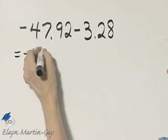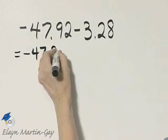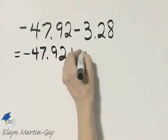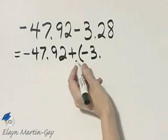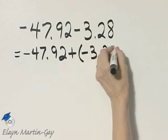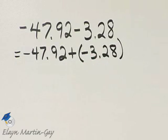So that's the first number, negative 47 and 92 hundredths, added to the opposite of the second number, so that would be added to negative 3 and 28 hundredths.